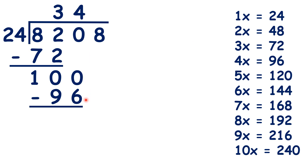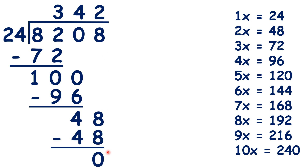100 minus 96 is 4, and we can bring down the last digit — bring down the 8. 48 divided by 24 is exactly 2, so we can write 2 in our answer, and we have nothing left to divide, so we know that 8,208 divided by 24 is 342.